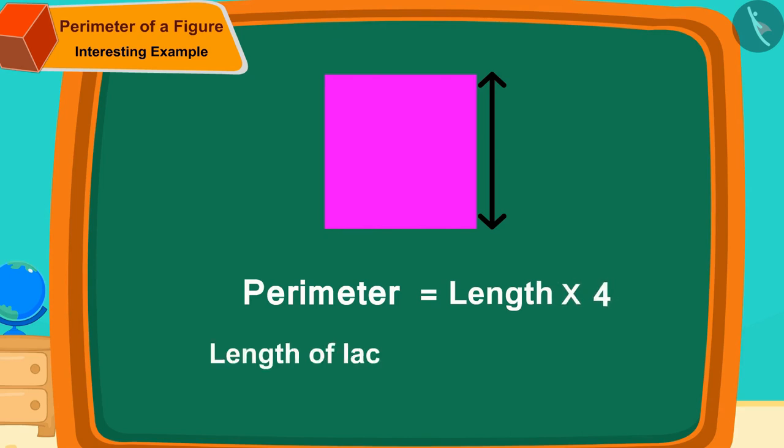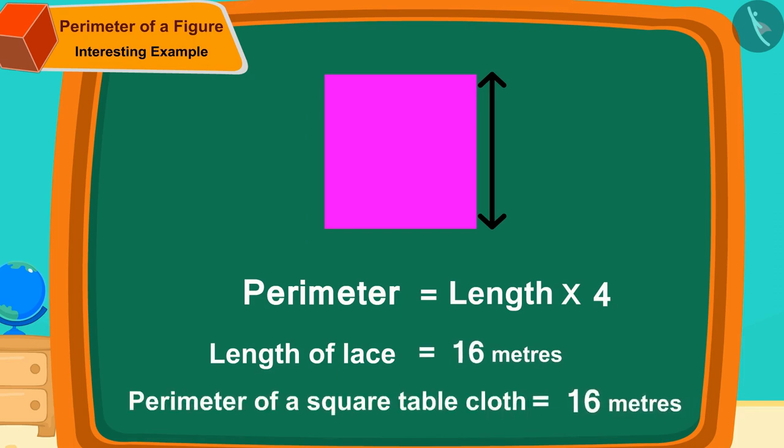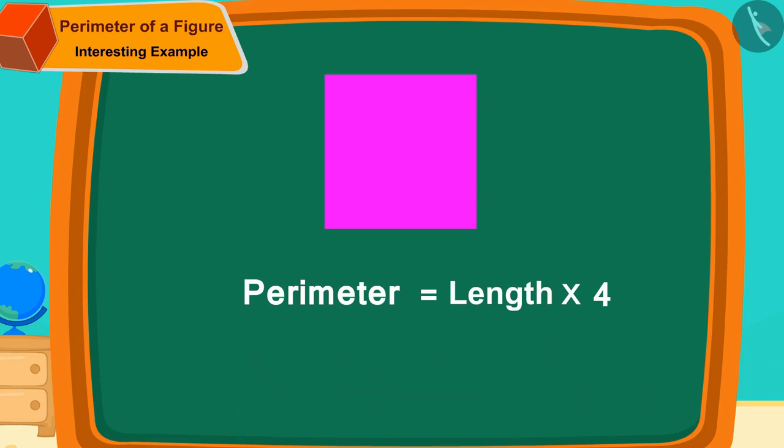The length of Banno's lace is 16 meters. It is exactly equal to the perimeter of a square shaped tablecloth.